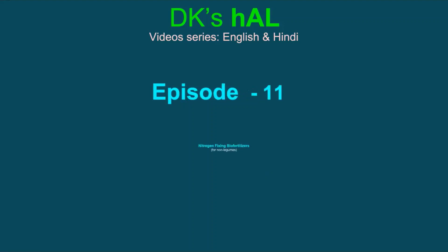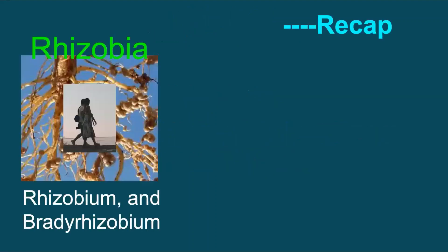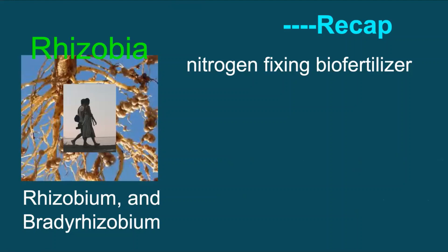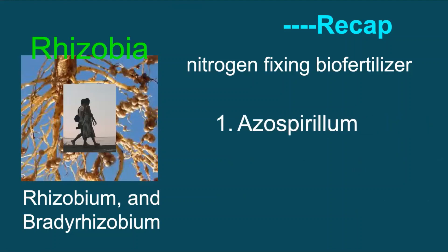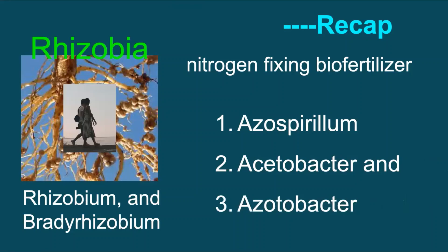Namaskar and welcome to the 11th episode of the video series DK's Hull. In the previous episode, we discussed rhizobia and its significance for legumes. Similarly, for non-legume crops, there are microbes that help in fixing atmospheric nitrogen in soil. In this episode, we will discuss three nitrogen-fixing biofertilizers: azospirillum, acetobacter, and azotobacter. Application of biofertilizers has several benefits apart from yield increase, which shall be discussed at the end of this video. We suggest watching the video till the end for practical benefits.